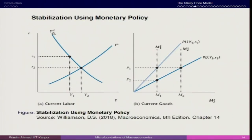Let us start with the first situation: stabilization using monetary policy. In this setup we have a demand-supply scenario. R2 is the equilibrium, but the central bank keeps the interest rate at R1. Here you have R1 and this R1 corresponds to Y1.